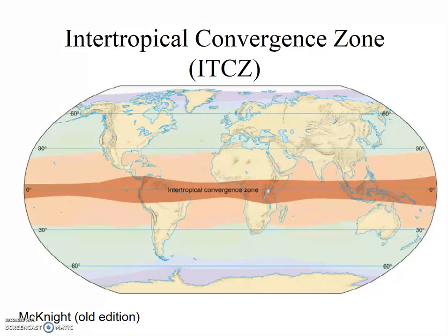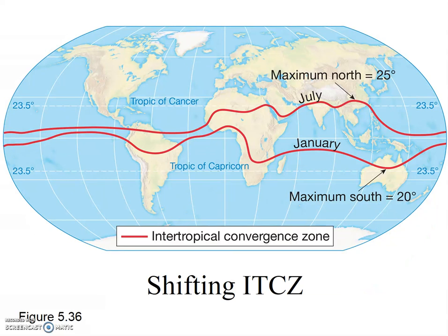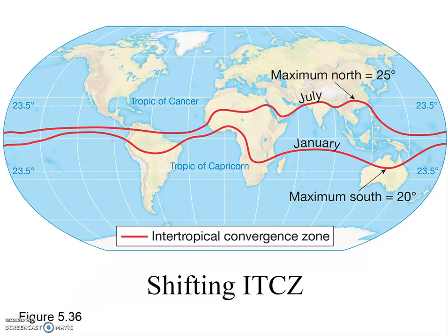Within the ITCZ, the weather is warm, calm, and cloudy. The dominant air movement is upward, not horizontal, and the rising moist air cools to form clouds. Notably, the ITCZ moves north and south a bit with the seasons — it's not always exactly over the equator. The movement is more pronounced over the continents than over the oceans, because the continents tend to heat up faster and to a greater extent than the oceans. So the ITCZ is a low pressure zone near the equator with rising air.